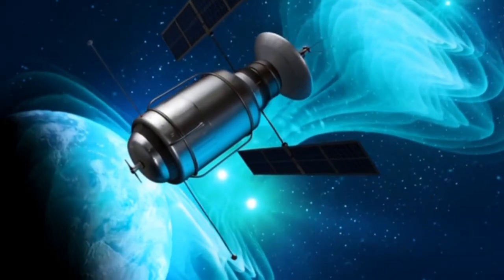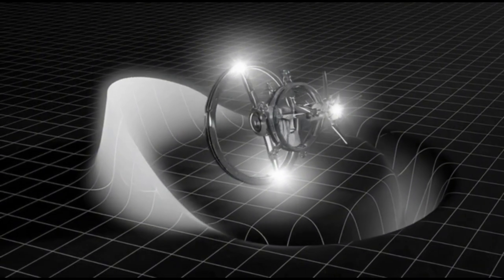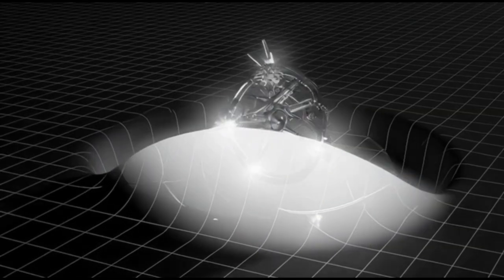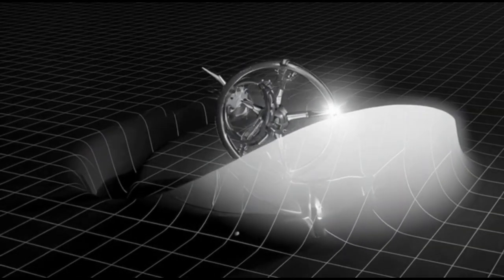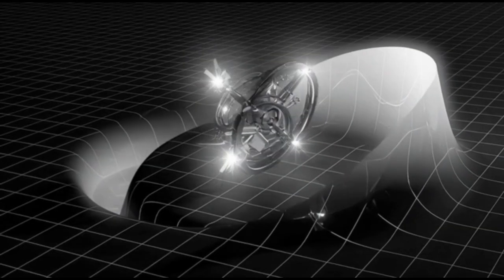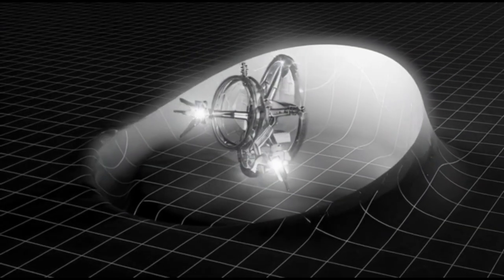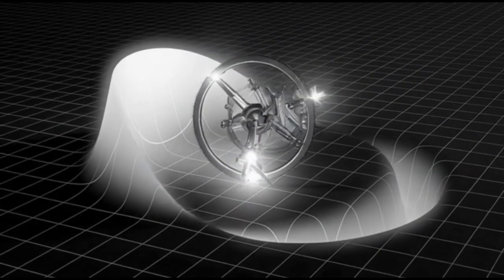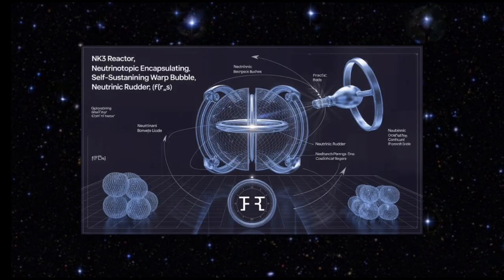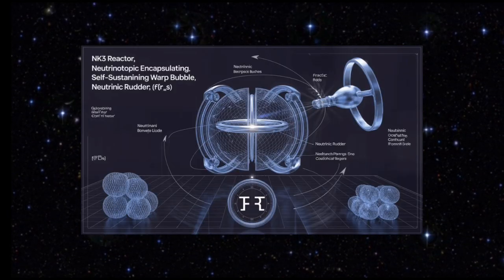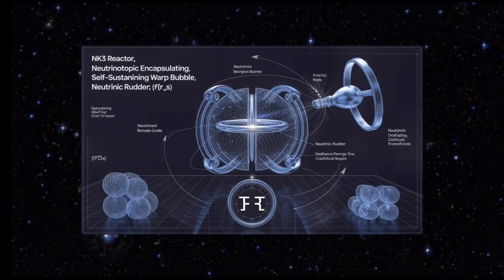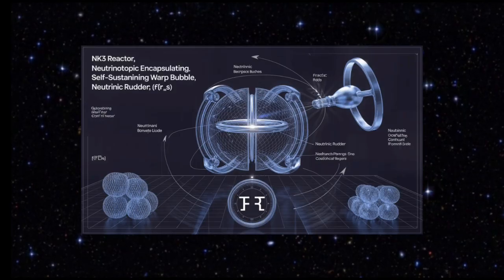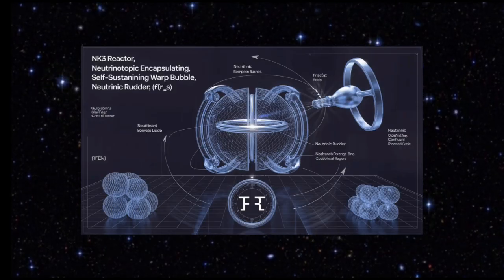Searching for signatures: astrophysicists are examining gravitational wave and electromagnetic data for anomalies that might resemble warp bubble behavior. Detecting one, even from a natural or alien source, would confirm the effect is real. Towards sub-light bubbles: some proposals explore creating slow warp bubbles for protection or acceleration within the solar system without exceeding light speed. Even partial success would revolutionize deep space travel.